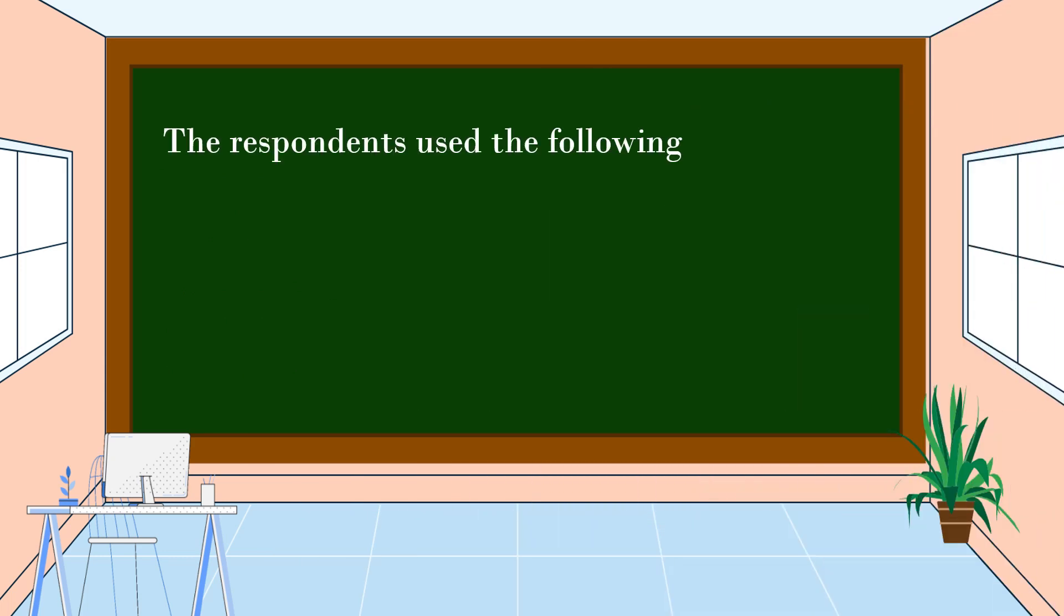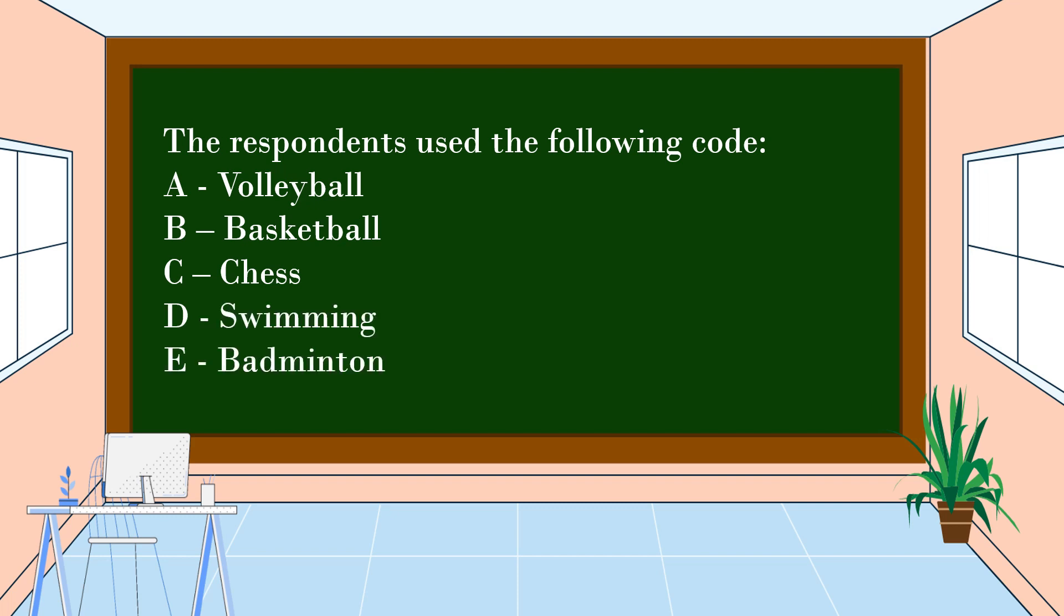The respondents used the following code: A for volleyball, B for basketball, C for chess, D for swimming, and E for badminton.